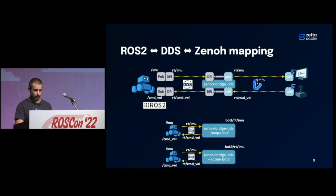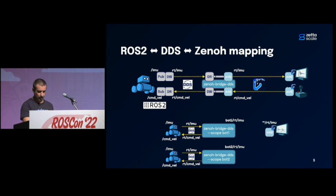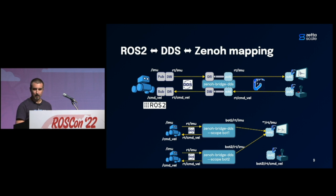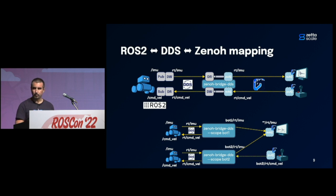For instance, the first robot uses scope bot1, so its Xeno publications go on the topic bot1/RT/IMU. The second one is bot2. In Xeno you can have a subscription using wildcard characters — star star — which matches any string in the topic. So subscribing on **/RT/IMU, this subscriber will receive all publications from both robots. Meanwhile, a teleop operation can publish only on bot2/RT/cmd_vel and drive only robot number two.